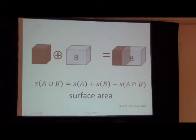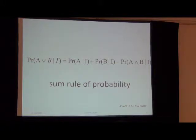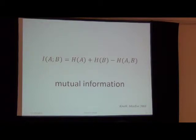On slide eight, you can see that this works also with surface areas. It also works with what's called the mean width, which is the length plus the width plus the depth. It also works with the Euler characteristic for polytopes. I discussed all this in a MaxEnt paper in 2003. On slide nine, you'll see that this is really the same rule again that we're familiar with in probability theory — this is the sum rule. On slide ten, you'll see the same form in the equation for mutual information.